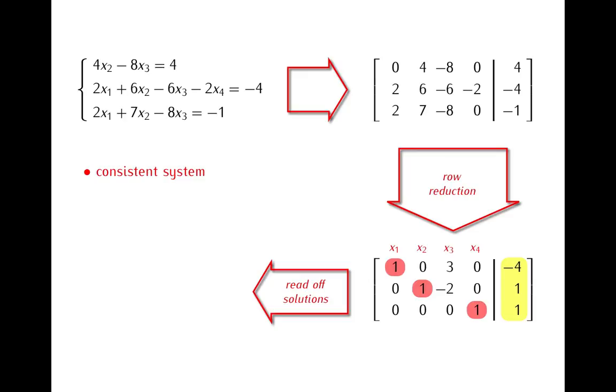The second thing that we see is that there is also no leading one in this reduced matrix in the column corresponding to x3. And this, as we know, means that x3 is a free variable in this system. So now we know not only that the system has a solution, but in fact it has infinitely many solutions. There will be one solution of this system for each value of x3.